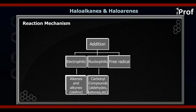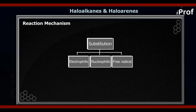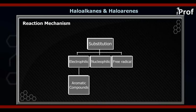Next we have free radical addition reaction. This reaction is shown by alkenes only, as we will see in subsequent chapters. Similarly, just as we have three types of addition reactions, we have three types of substitution reactions. The first is electrophilic substitution, which is shown by aromatic compounds.